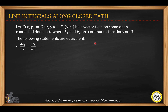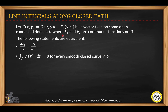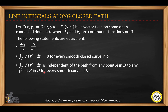Considering line integrals along a closed path: given a vector f, if the first partial derivative of f1 with respect to y equals the first partial derivative of f2 with respect to x, then the dot product equals zero for every smooth closed curve in d. This means the integral is independent of the path from any point a in d to any point b in d, for every smooth curve in d.